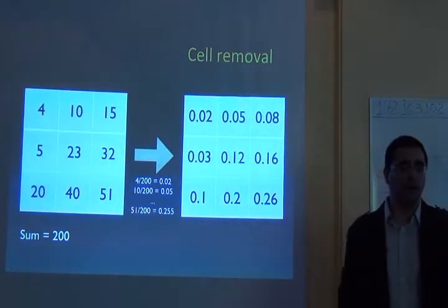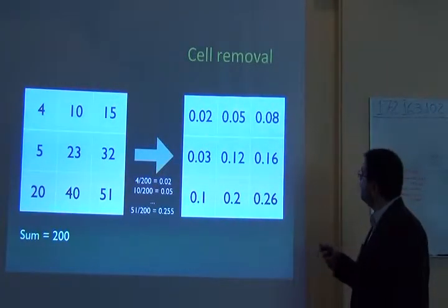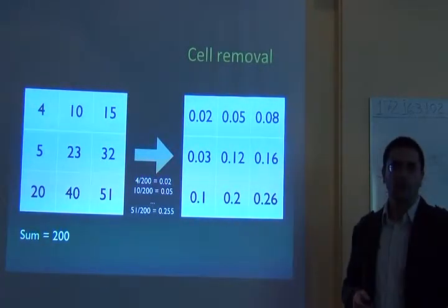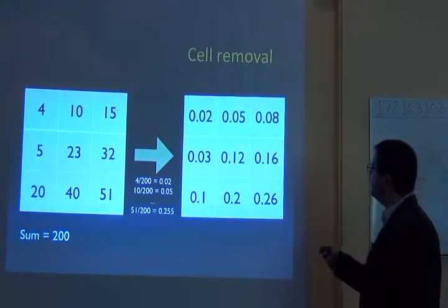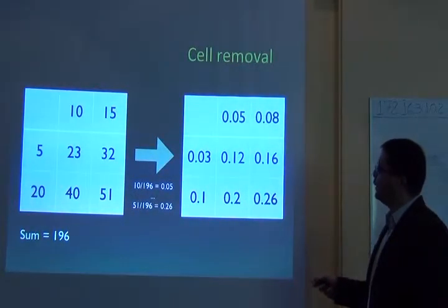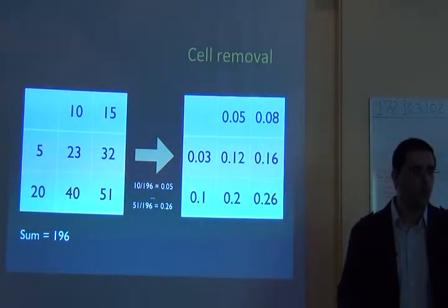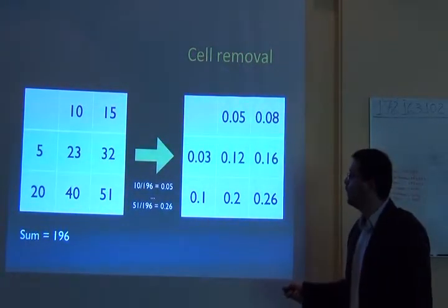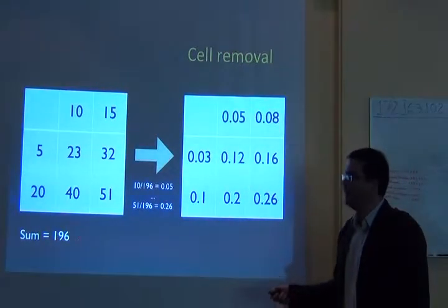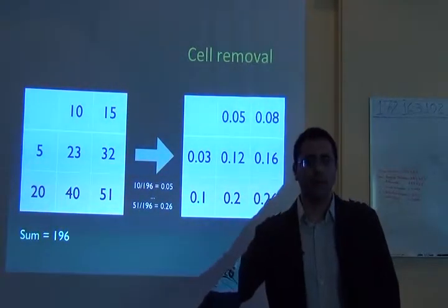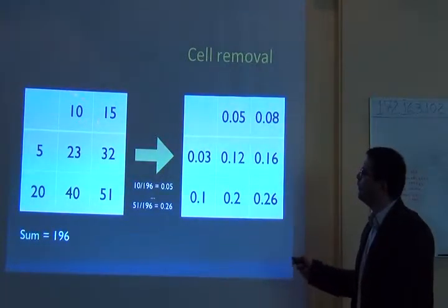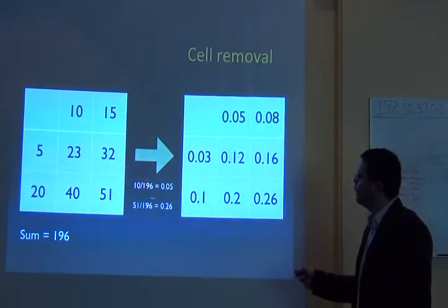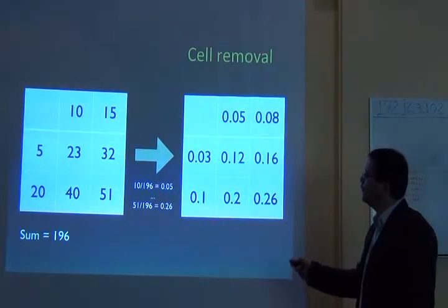The algorithm asks: which cell here has the lowest value of importance, contributing the least to the system? That will be the one with 2%, so it removes that cell. When I remove the cell, I have to recalculate everything because the total is now not 200 individuals but 196 — I removed the cell with 4 individuals. So now, for example, the relative contribution of the next cell will be 10 over 196, contributing about 5% of the total.